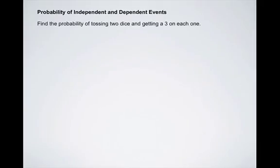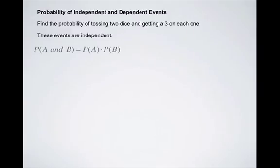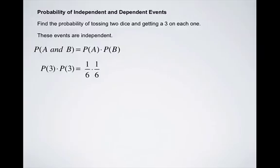As an easy example, we're going to consider the probability of tossing two dice and getting a three on each die. These events are independent because the outcome on the second die does not affect the outcome on the first die and vice versa. The probability of getting a three on the first die and a three on the second die equals 1/6 × 1/6 = 1/36. This makes sense because there are 36 possible outcomes when you roll two dice, and only one outcome where you get a 3 on each die.